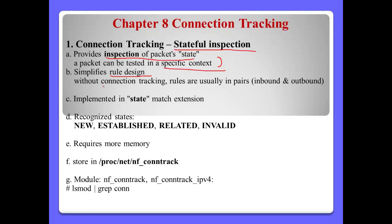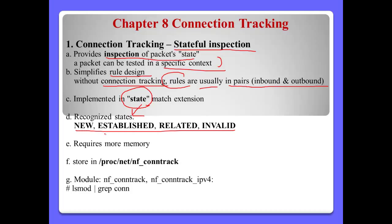If we don't have connection tracking, IP tables rules can only be tested individually — for example, inbound or outbound. If we want to use connection tracking, we use the match extension 'state'. In match state, there are four kinds: New, Established, Related, and Invalid.